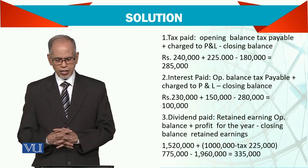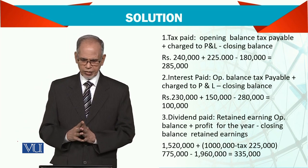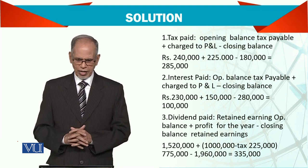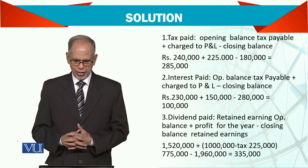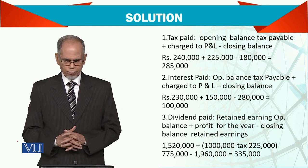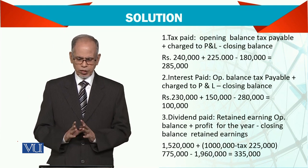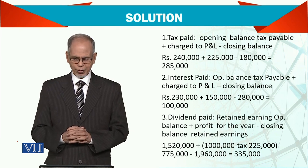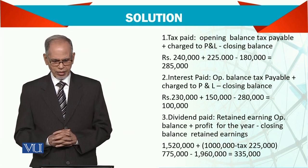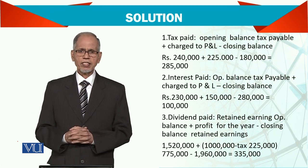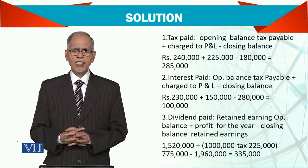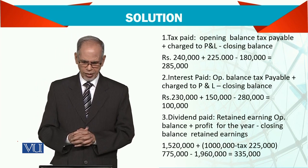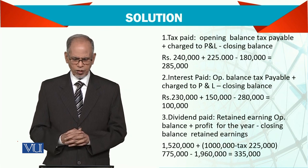Interest paid is also worked out similarly: opening balance of interest payable, then charge to profit and loss account, and then the closing balance gives the interest paid. And then we have dividend paid, which is actually worked out from the retained earnings — how much was the retained earnings, what profit we have added, and what are the remaining retained earnings. The difference is your dividend paid, because we need to reconcile all these figures.